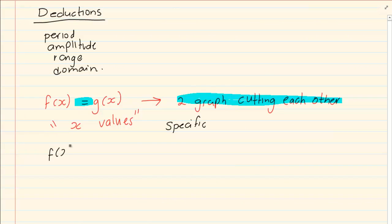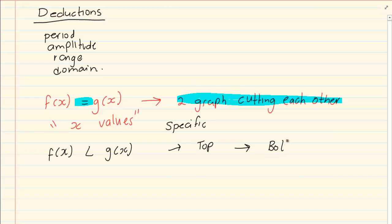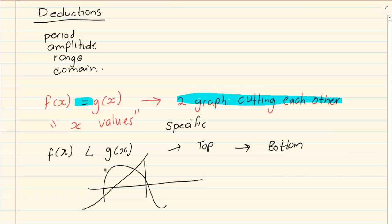Now when they ask for one value smaller than the other, what it means is one graph is on top and one graph is at the bottom. But this is not at a specific point. This answer could run — like if you were having a parabola, the parabola is on top from this point until this point.